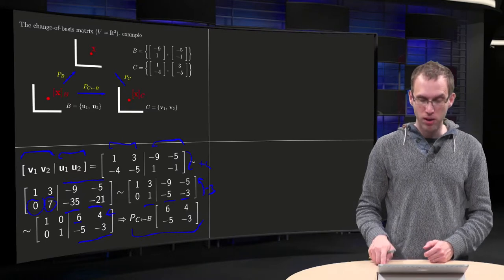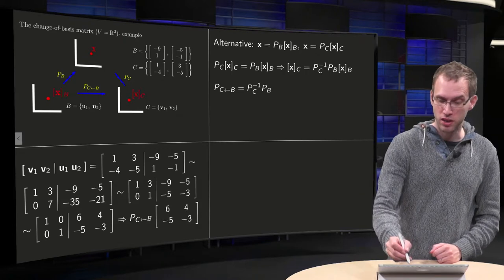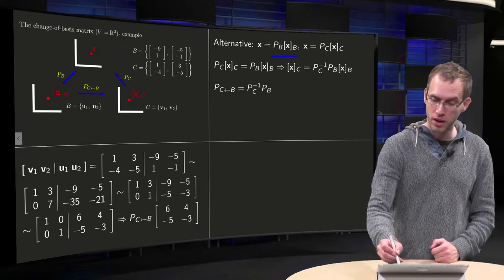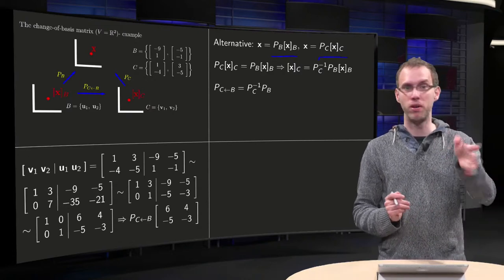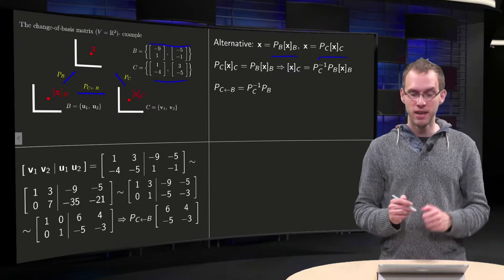And we can also compute it in a slightly different way, alternative way. Because we know X equals PB times XB, and we know PB. And we also know X equals PC times XC, and we know PC. That's just plugging in the factors from the basis B and C into a matrix.